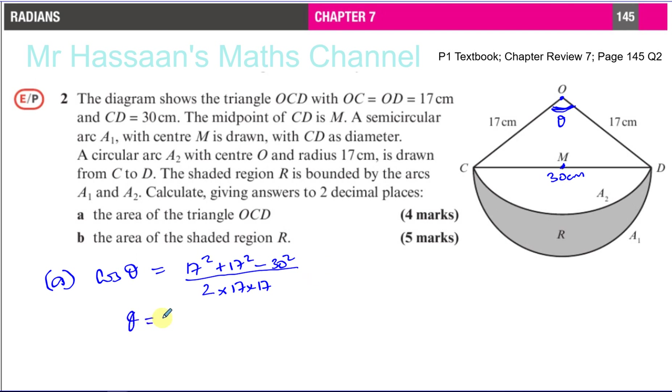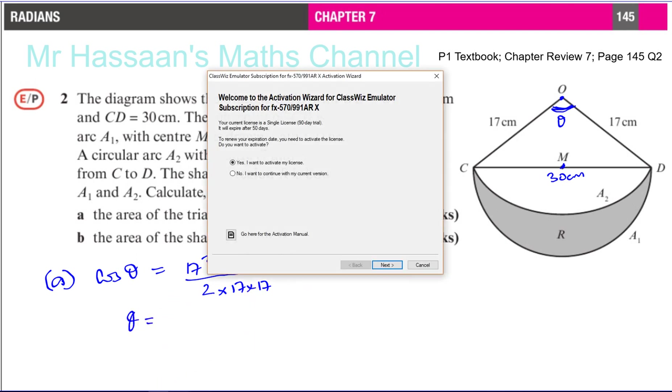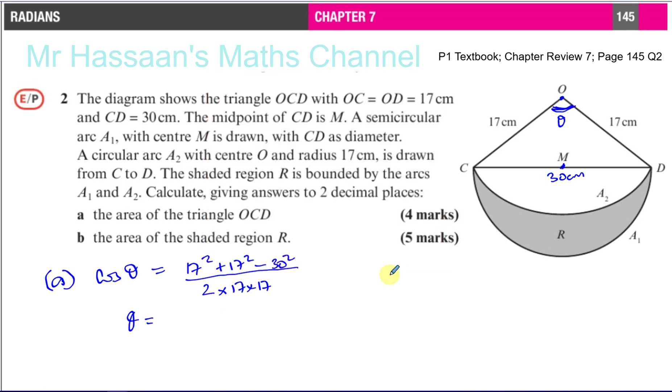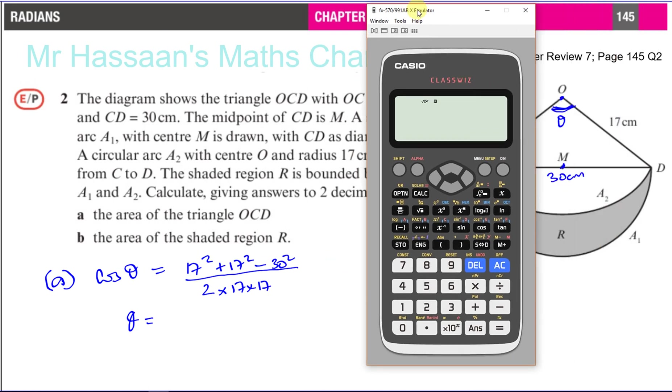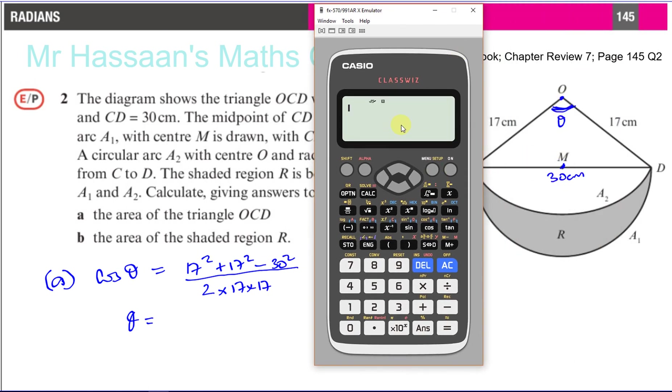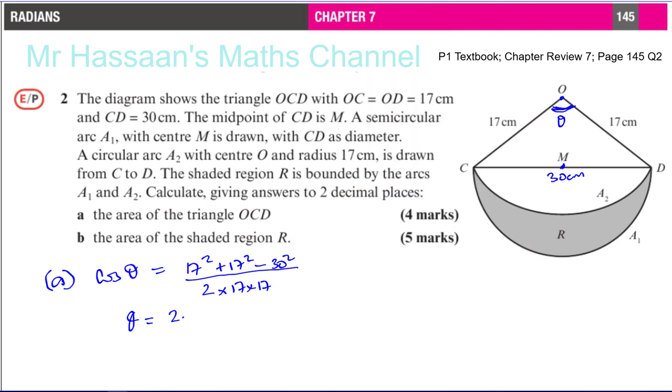So theta is shift cosine of all of that. So if I take my calculator, and I make sure that it's in radian mode, because we're going to be dealing with radians here, so this is in radian mode, that's fine. So I'll just press inverse cosine of 17 squared plus 17 squared minus 30 squared over 2 times 17 times 17. Close the bracket, equals. That gives me 2.16167, and it has some more numbers.